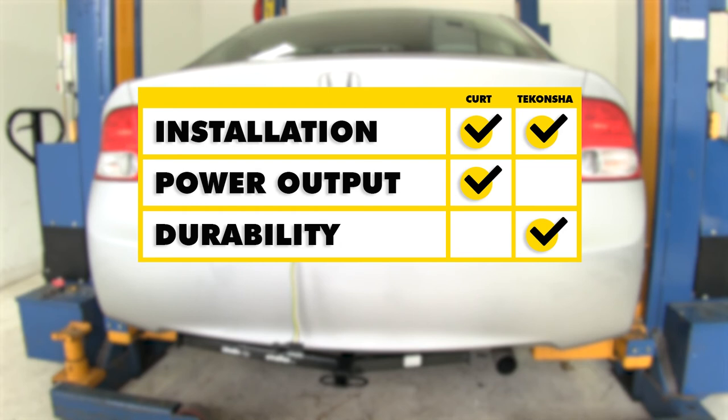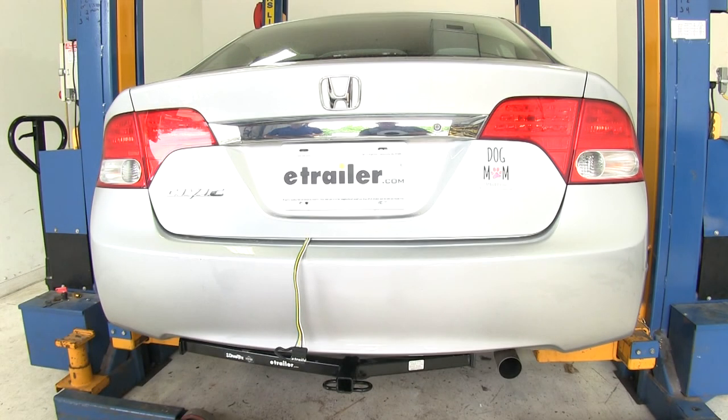When it comes to durability, the Tekonsha with the potting material located inside of the converter box is definitely better. That's going to complete our look at the best custom fit vehicle wiring harnesses available for your Honda Civic.